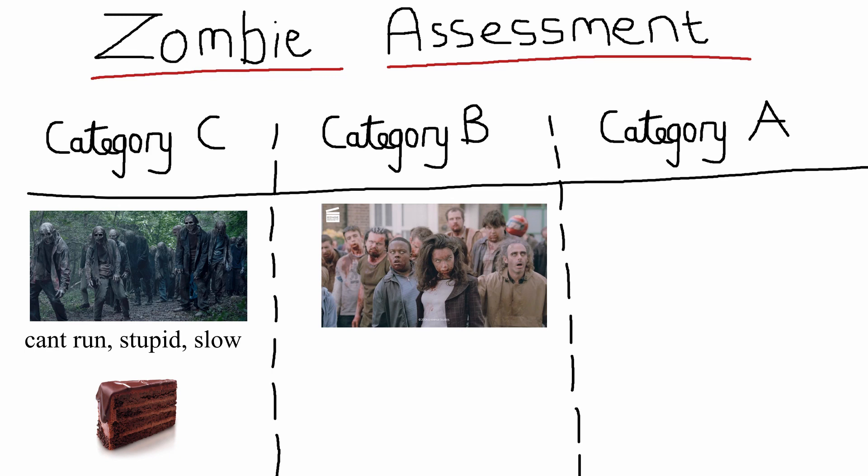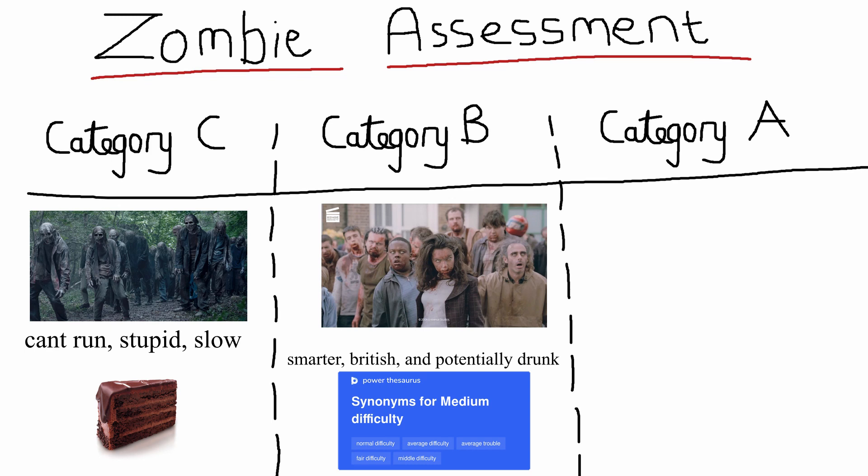However, the reason these zombies are a bit more dangerous than Category C is because one, they are slightly smarter, and two, they are British zombies. And we all know Americans are not the smartest. Also, British zombies might have been drunk just before they turned into zombies, which could end up being a very dangerous combo. However, there is still hope with Category B zombies. You just have to have your wits about you.